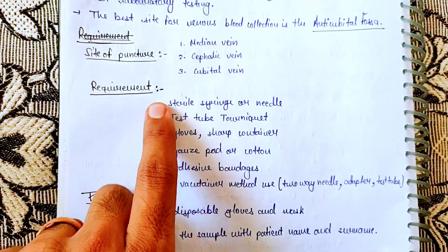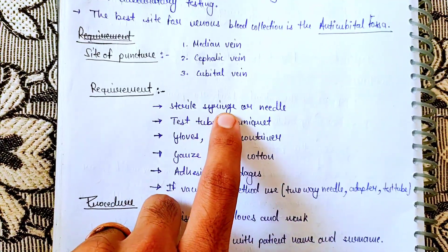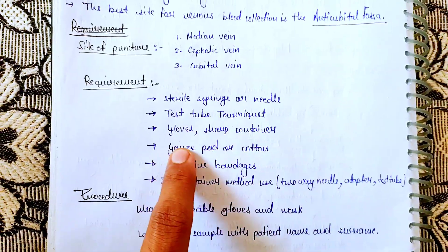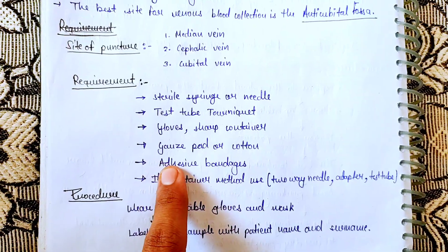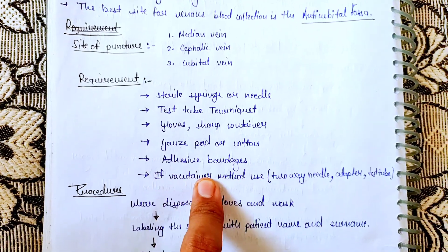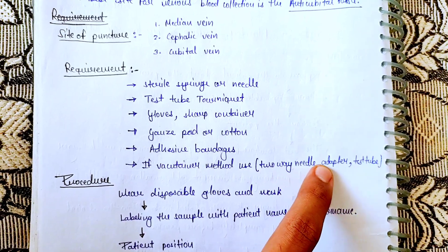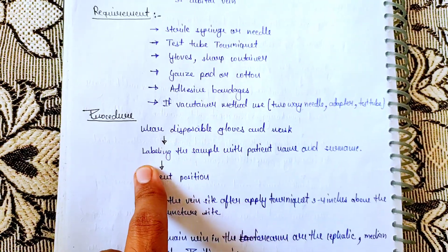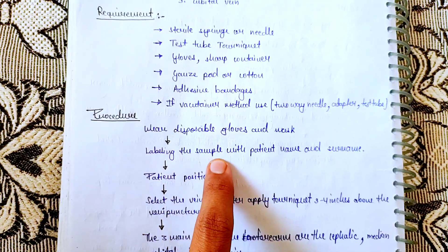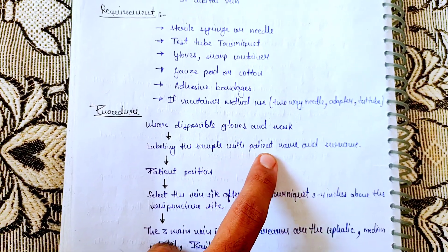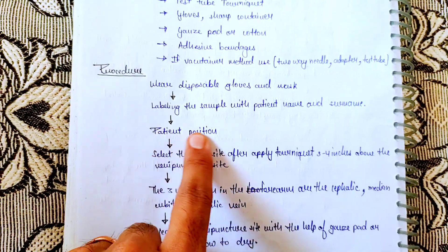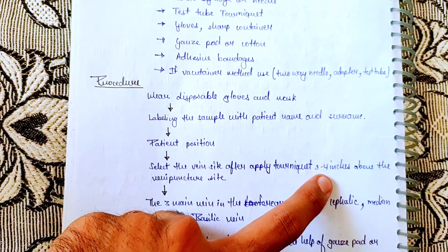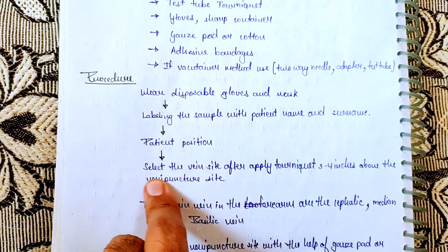Requirements include: sterile syringe, needle, test tube, tourniquet, gloves, sharp container, gauze pad or cotton, and adhesive bandage. If the vacutainer method is used, a needle adapter and test tube are needed. Procedure: Wear gloves and mask, label the sample with the patient's name and surname, position the patient, identify the site, and apply the tourniquet 3 to 4 inches above the venipuncture site.